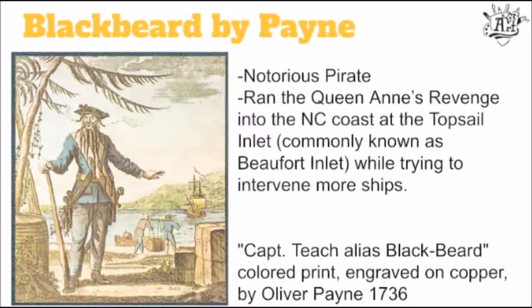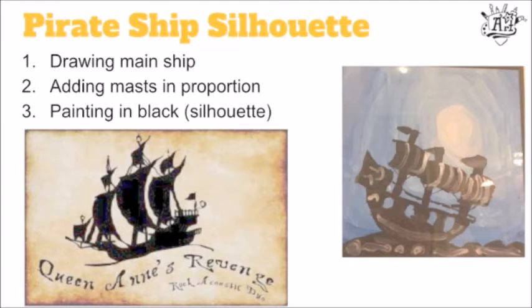So for our project, we're going to be recreating that night. We're going to learn how to draw a basic ship, adding the masts and sails in proportion — meaning they should be the size they would be relative to the boat — and painting or drawing the ship in black so it looks like a silhouette against the night sky.